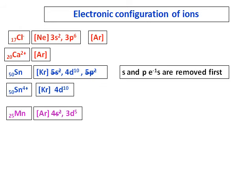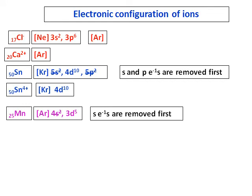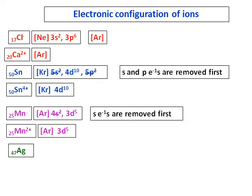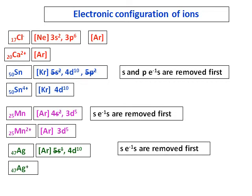For manganese-25, 4s is filled before 3d, but when removing electrons, the S electrons are removed first. So Mn2+ has the configuration [Ar] 3d5. For silver, the S electron is removed, leaving the D orbital intact. The key rule: whenever D orbitals are involved and the element forms ions, it is the S electrons which are removed first.